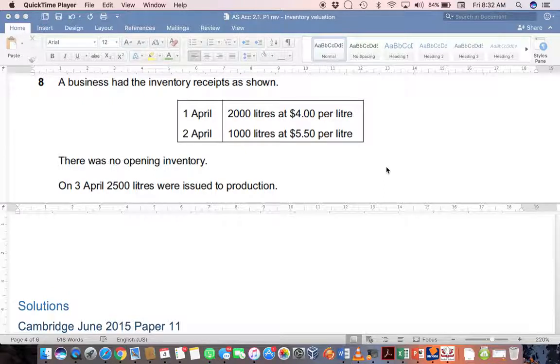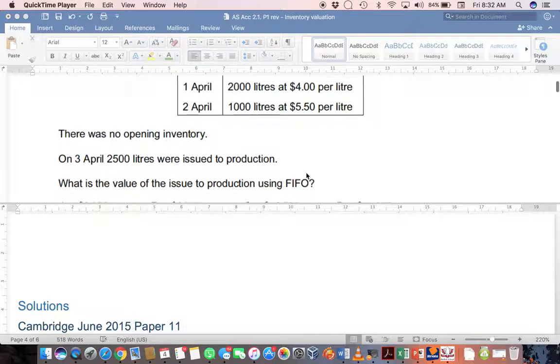On the 3rd of April, 2,500 litres were issued to production. So we had a total of 3,000 litres coming in and 2,500 litres coming out. We need to decide how to value this liquid that was issued to production.